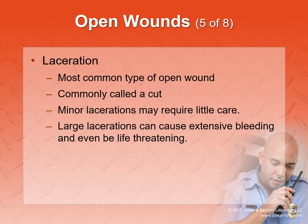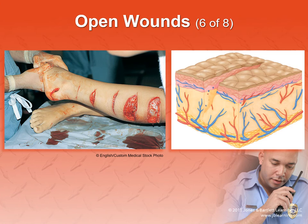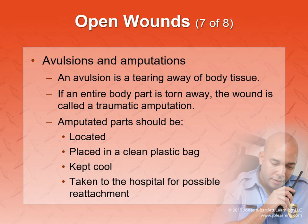A laceration is a cut — most common type. It usually goes to deeper levels of the skin, maybe not to the bone but beyond the surface. An avulsion is a tearing away of body tissue where the skin may still be hanging — a skin flap. We want to maintain that skin flap because there's a chance it's still getting blood flow and can be incorporated back into the wound so the person can heal.